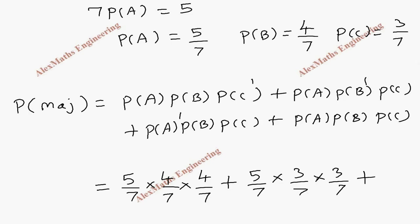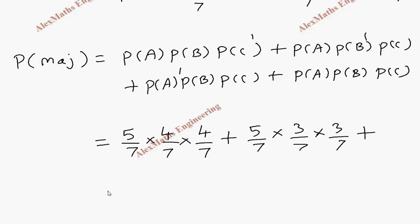Plus P(A'), 2 by 7, times P(B), 4 by 7, times P(C), 3 by 7. And here everything is P(A) times P(B) times P(C): 5 by 7 times 4 by 7 times 3 by 7.